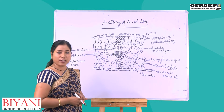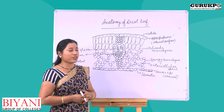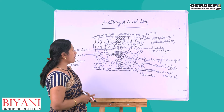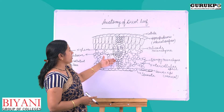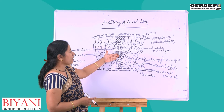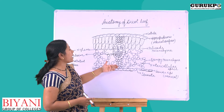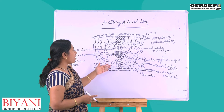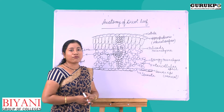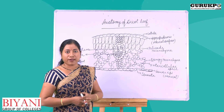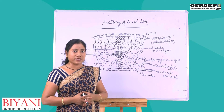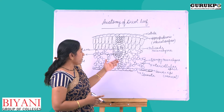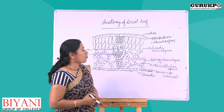These vascular bundles are conjoint, collateral, and closed — meaning xylem and phloem are both present on the same radius with no cambium present between them. Collateral means phloem is present towards the lower epidermis and xylem is present towards the upper epidermis. Xylem is made up of xylem parenchyma, tracheids, and vessels, and its function is to transport water.